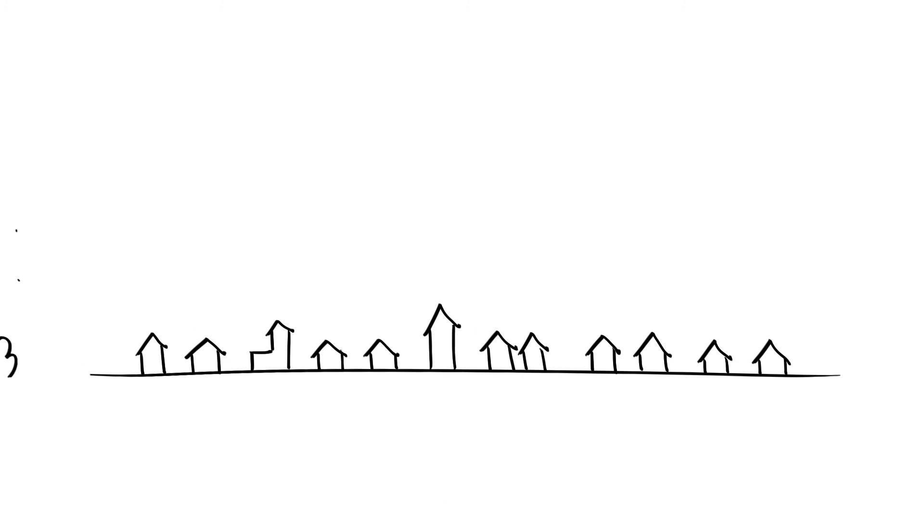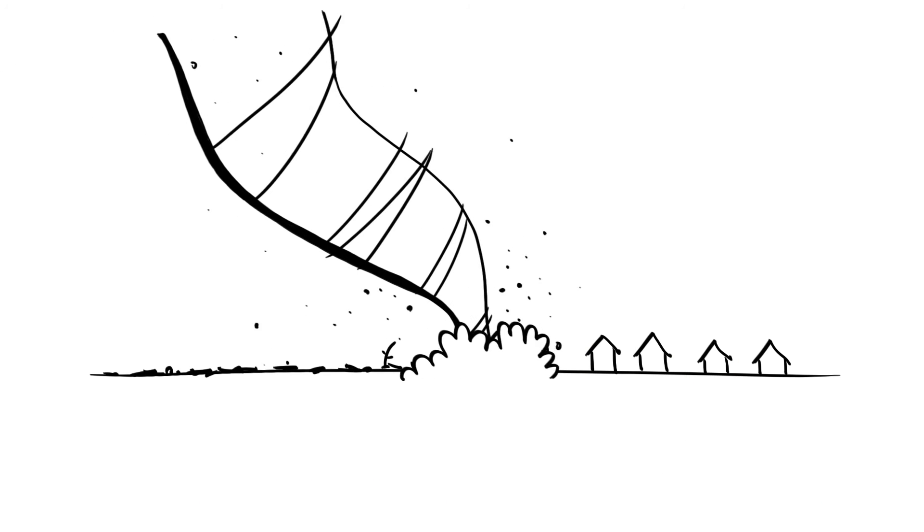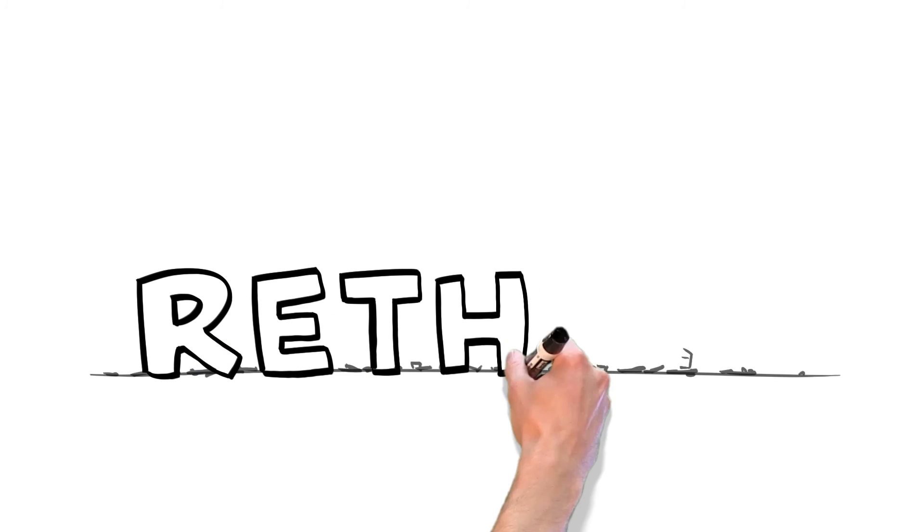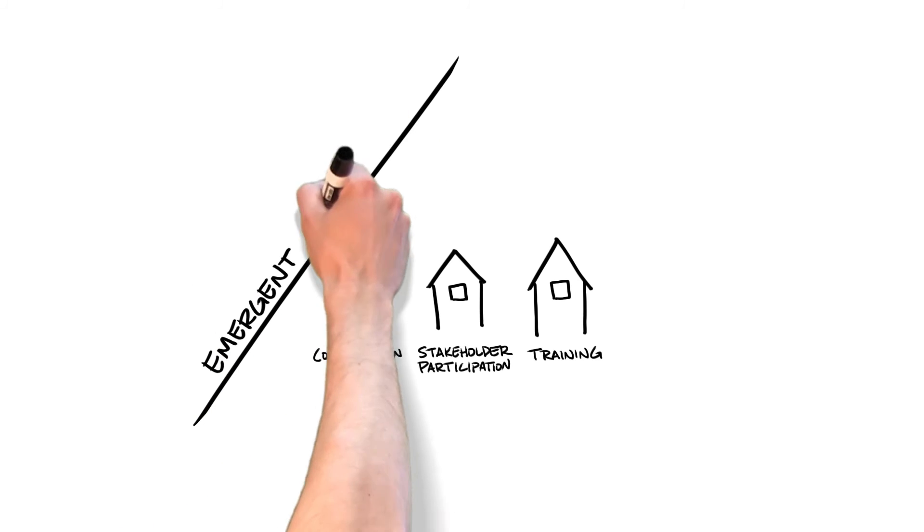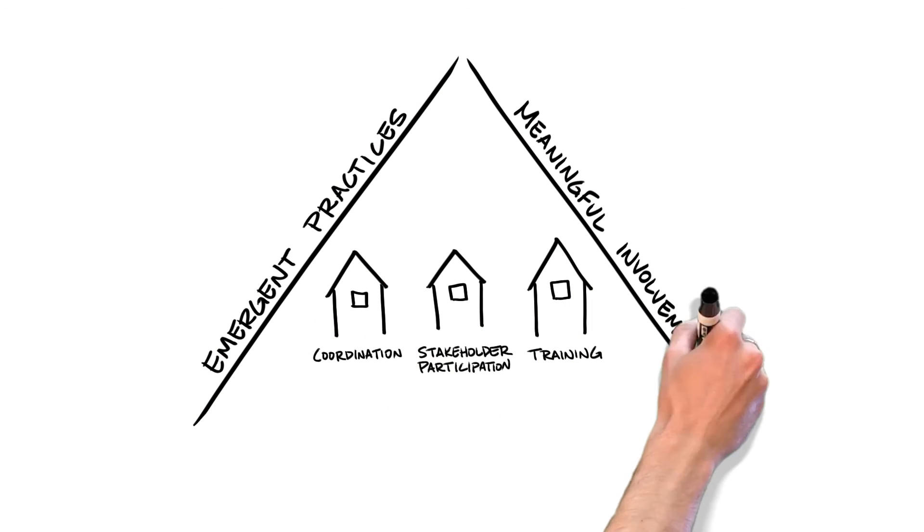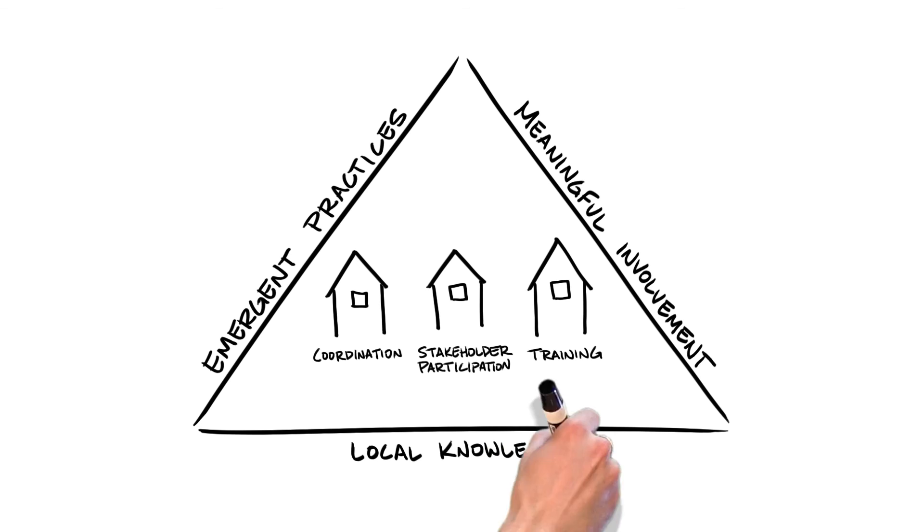So the big lesson from our research is that we can develop resilient and sustainable infrastructure systems if we're willing to rethink some of the conventional wisdom around coordination, stakeholder participation, and training. Focusing more on emergent practices, meaningful involvement, and local knowledge.